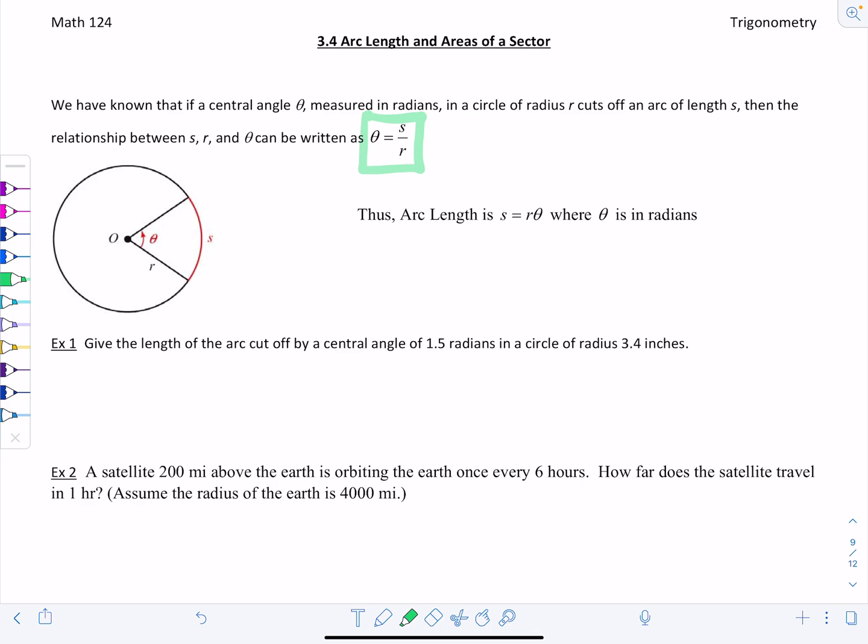If you rearrange that equation, then we get a formula to find arc length s. Arc length is equal to r times theta, where theta has to be measured in radians. We took theta equals s divided by r, and multiply both sides by r. It cancels out, and you get s equals r times theta.